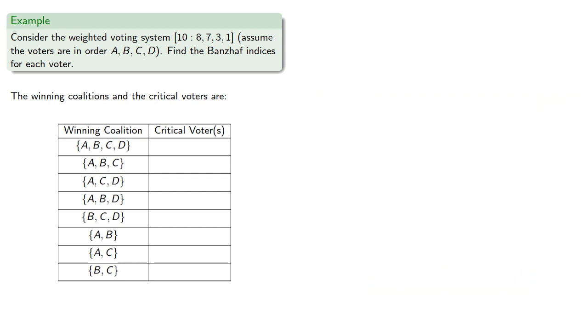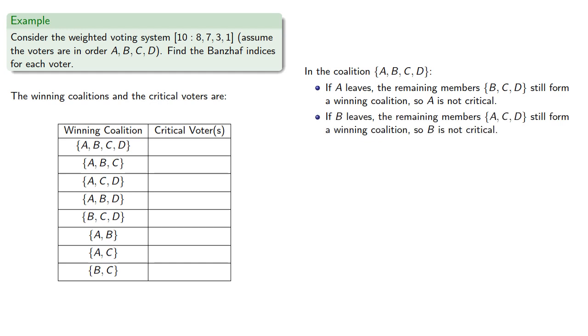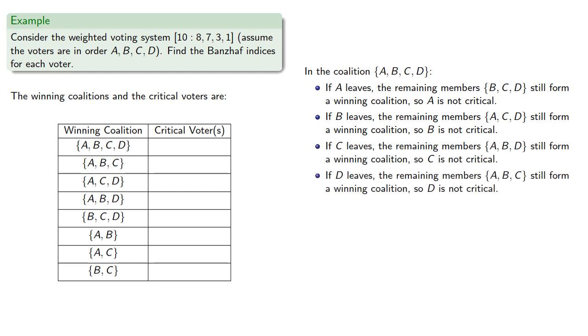So now let's find the critical voters. In the coalition of all four voters, if A leaves, the remaining members still form a winning coalition, so A is not critical. If B leaves, the remaining members are A, C, and D, and they still form a winning coalition, so B is not critical. And we can make a similar observation if C or D leave. This means that no member is critical.